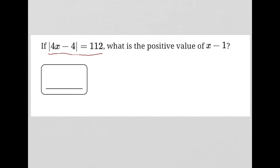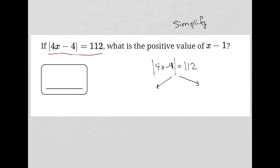I'm going to straight away just treat this like a simplify question. I'm going to take this absolute value equation and simplify it. The way that we solve absolute value equations is we break them into two separate equations — one which looks exactly like the original equation, just without the absolute value sign.